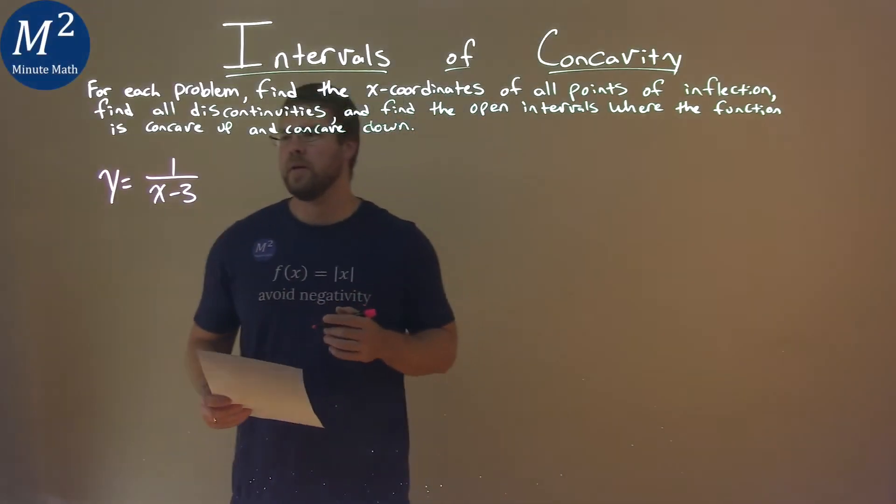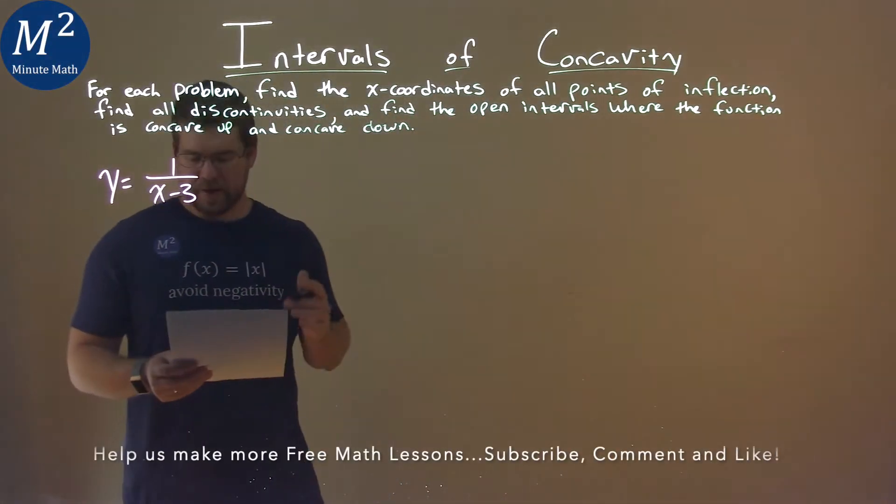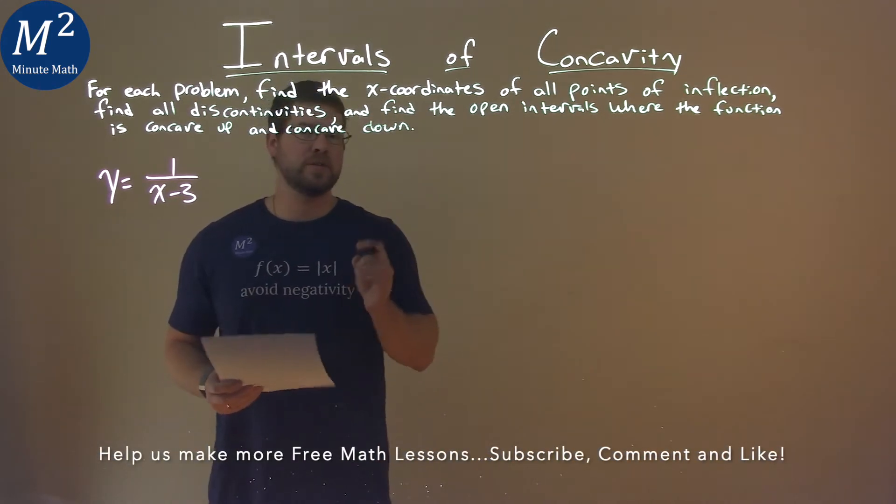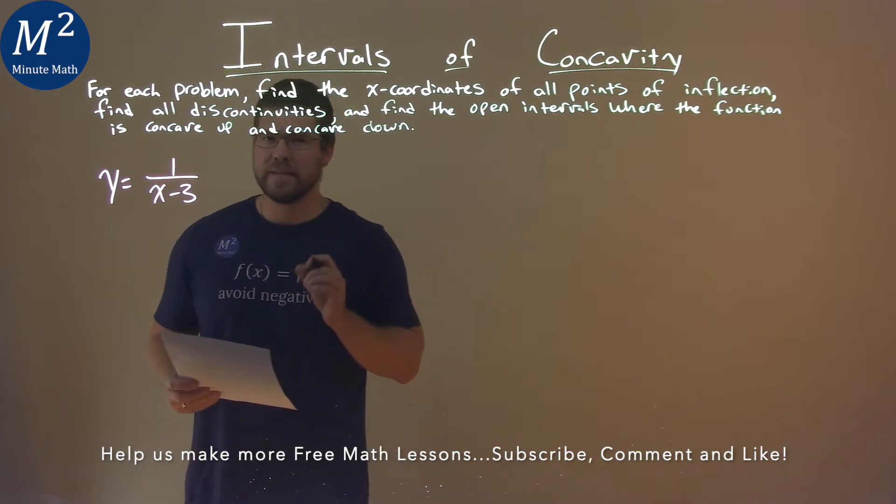We're given this problem: y equals 1 over x minus 3. We want to find the points of inflection, discontinuities, and where the function is concave up and concave down.